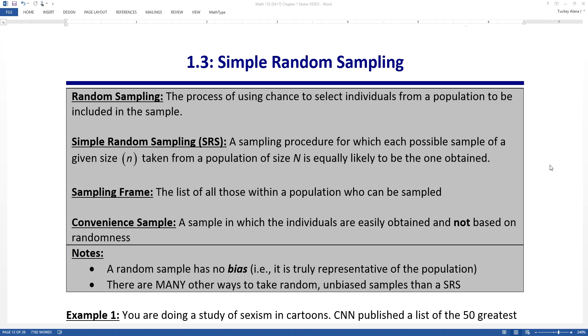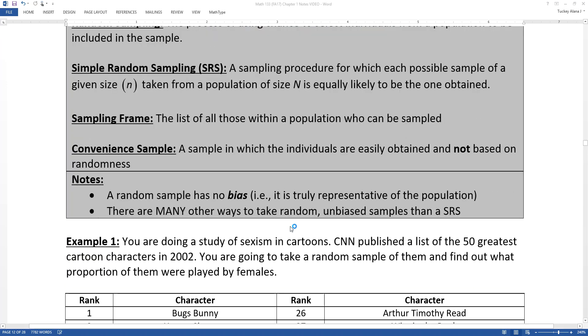As opposed to a convenient sample, a convenient sample is a sample in which the individuals are easily obtained and not based on randomness. For example, instead of calling up students randomly or emailing them randomly, we just go over to one of the buildings that's holding classes and we just ask every student that we see in the hallway. That would be a convenient sample.